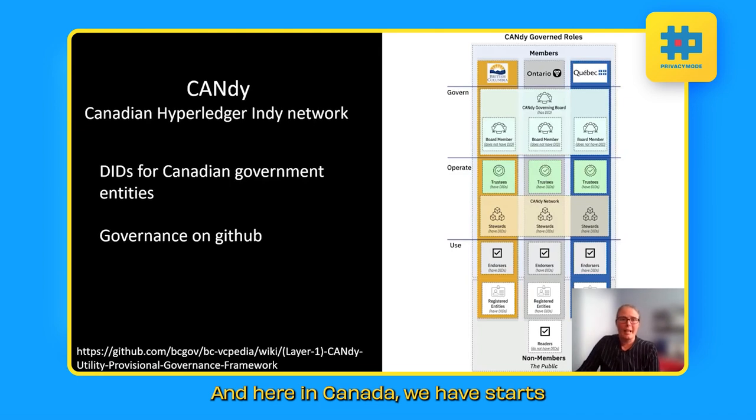And here in Canada, we have the starts of another decentralized identity ecosystem. So some of the provinces are contributing to a Canadian Hyperledger Indy network called CANdy. The idea is that Canadian government entities can be given identifiers and they will be able to issue and digitally sign verified credentials. And the governance for this is available, readable on GitHub. The link is down below.